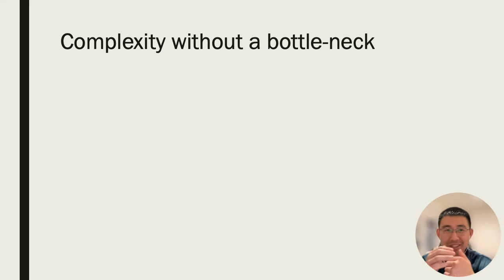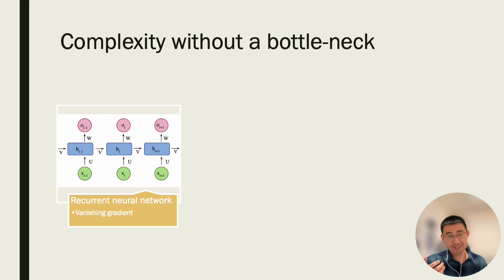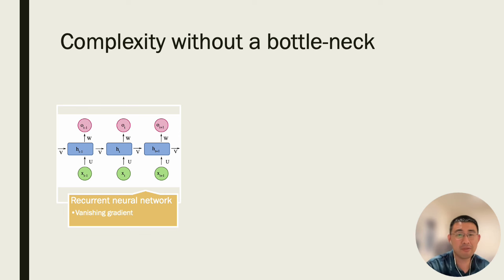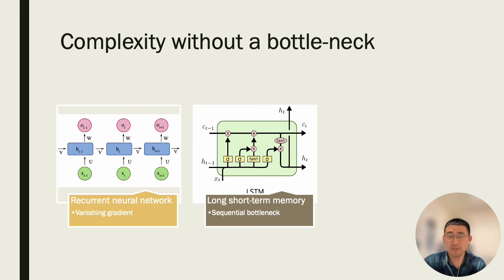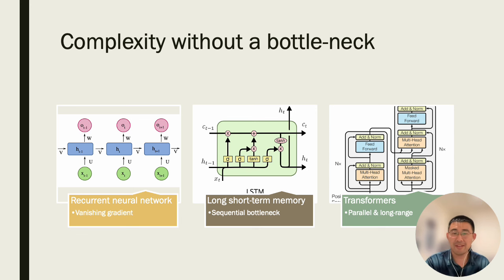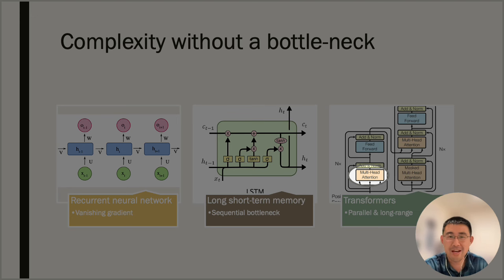Let's come back and look at history. In the beginning we had a vanilla recurrent neural network, RNN, suffering from vanishing gradient. Then long short-term memory solved vanishing gradient but remained a sequential model with a computational speed bottleneck. Then the transformers made things parallel, and the trick is all in the multi-head attention block in the whole architecture.